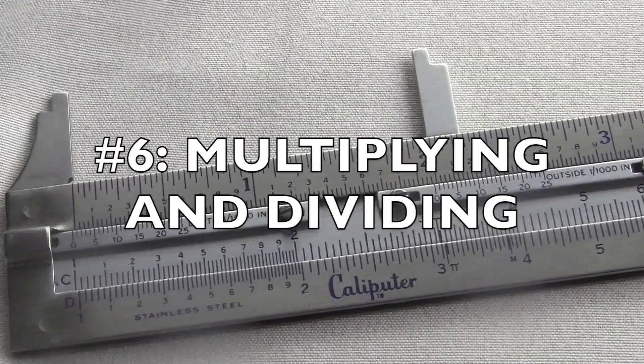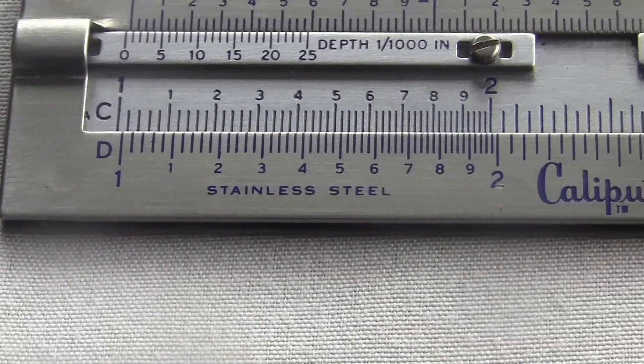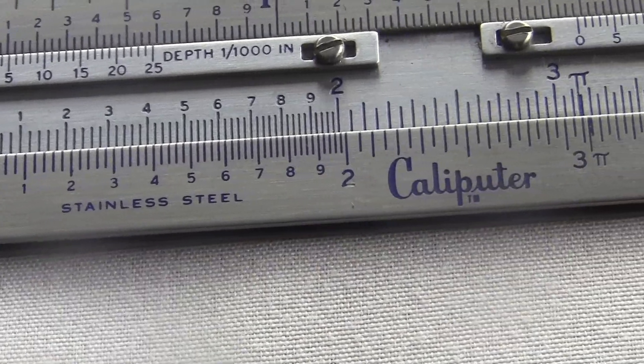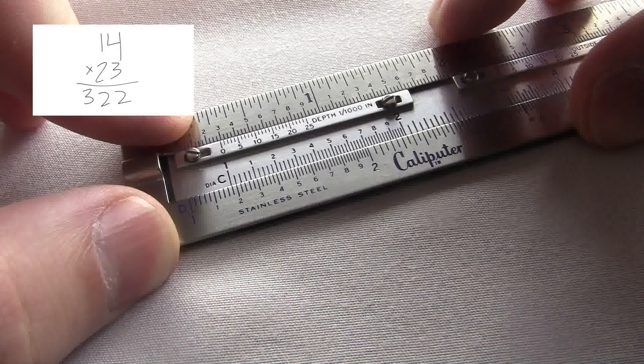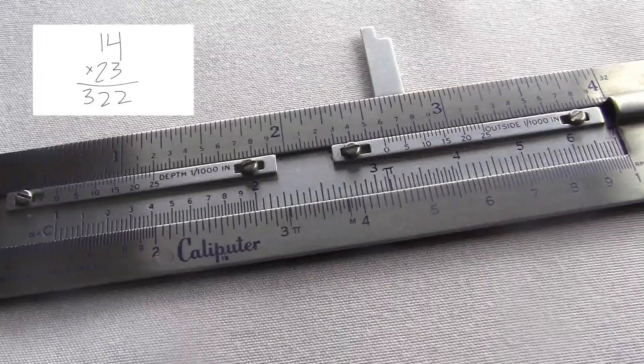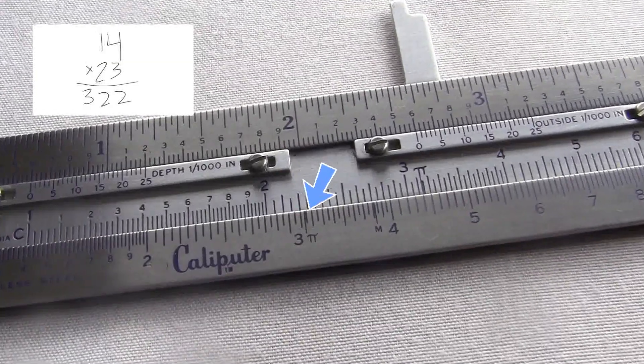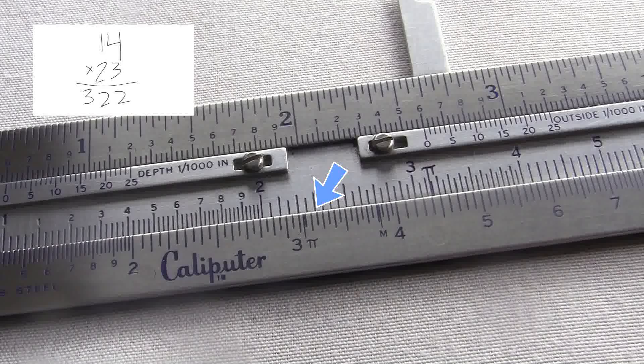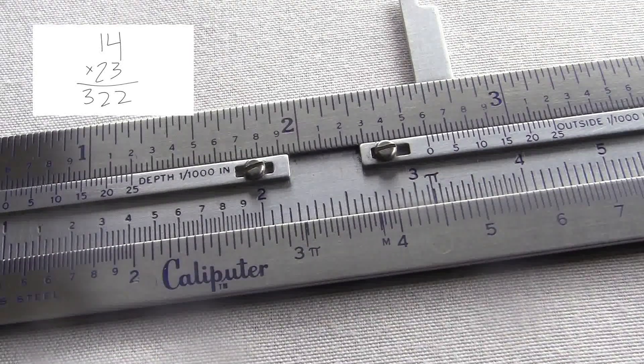Number six, multiply and divide numbers. These two logarithmic scales on the bottom make it into a slide rule. So you can multiply and divide numbers just like on a slide rule. If you want to multiply two numbers, let's say 14 times 23. I slide the top scale over to 1.4, which I'm going to use for 14. And then I look at 23 on the top scale and read that answer on the bottom. Looks like just past 3.2. So the answer 14 times 23 must be a little bit over 320.